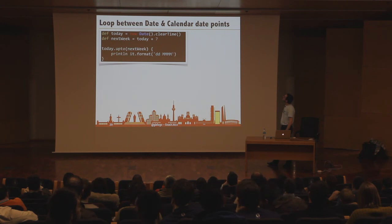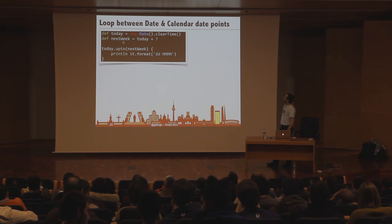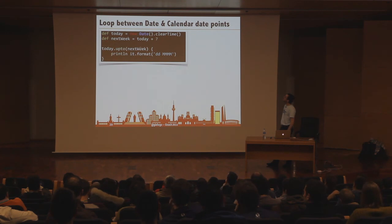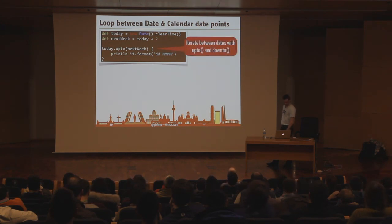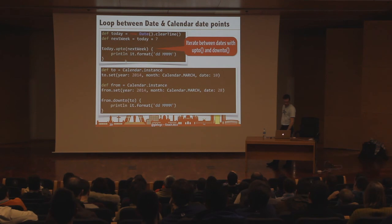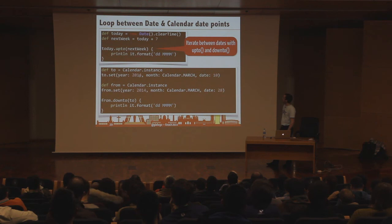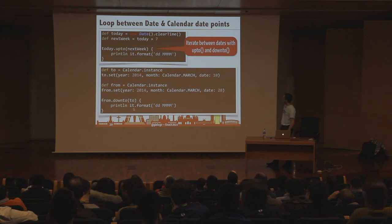You can loop between date and calendar date points. If you have two time points — today and next week — you can do 'today.upto(nextWeek)' and it prints all the dates in between. There's also 'downto' for going backwards. Similarly for Calendar, you can go from one date down to another.